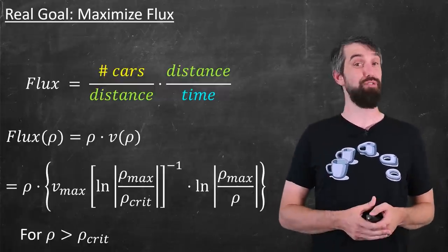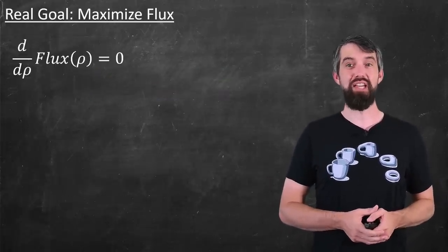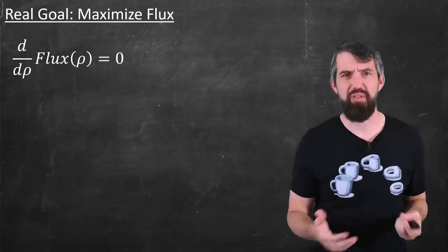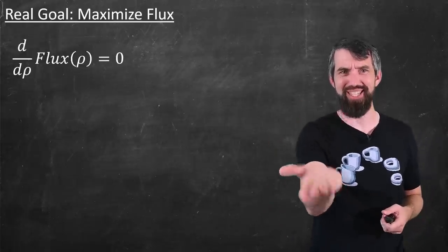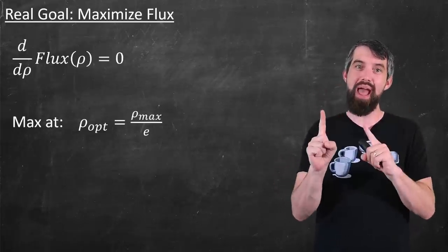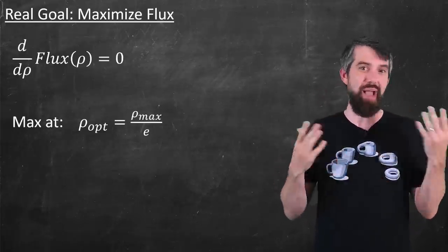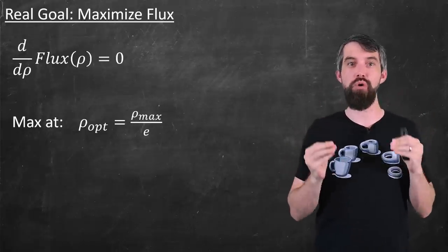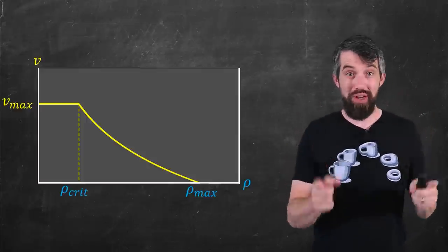So I can actually compute what the maximum flux is. I mean, how do I figure out maximums in the first year calculus sense? Well, I could just take the derivative of the flux and set it equal to zero. That was a little bit of a messy expression, so I will leave it to you to do down in the comments. But trust me, the maximum occurs at ρ_max divided out by e, which I'm going to denote to be the optimal density, ρ_opt.